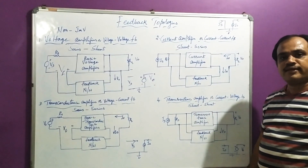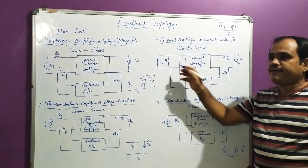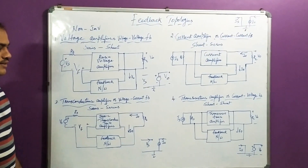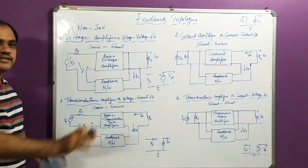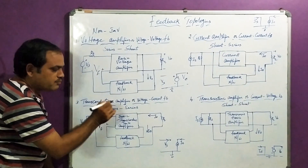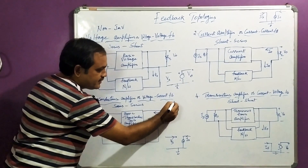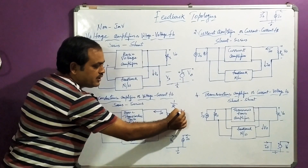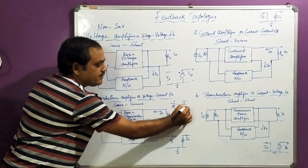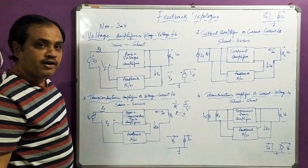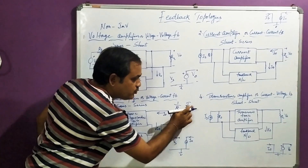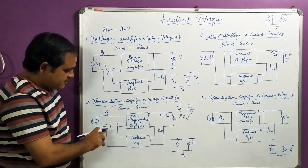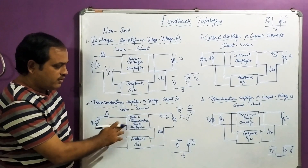Current amplifiers are usually used in transistor circuits where input is also current and output is also current. The next two topologies are just adjustments of these two. The transconductance amplifier — conductance is the inverse of resistance. Resistance is V by I, so the inverse means I by V. So the gain is output current divided by input voltage. Such amplifiers are also called voltage-to-current converters, or voltage-to-current feedback structure.